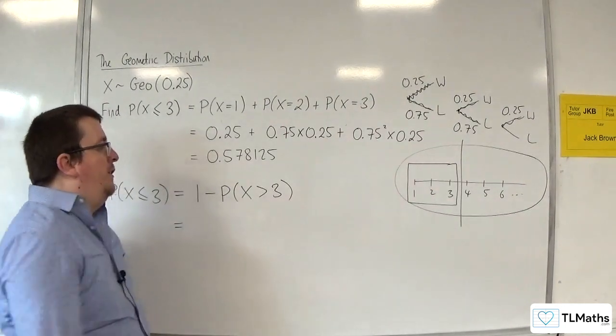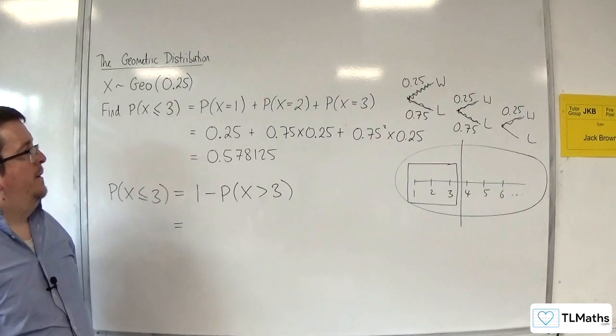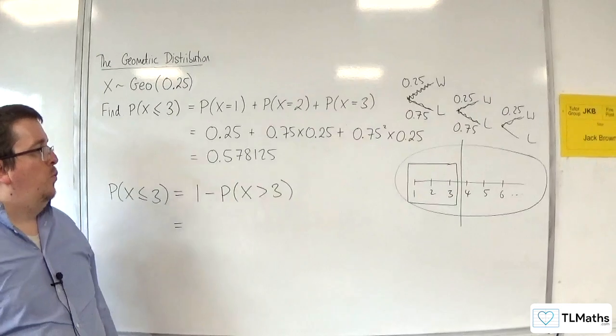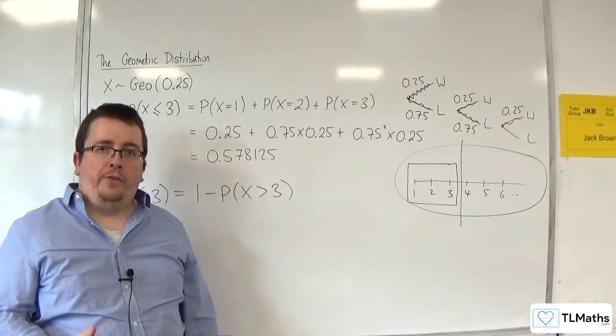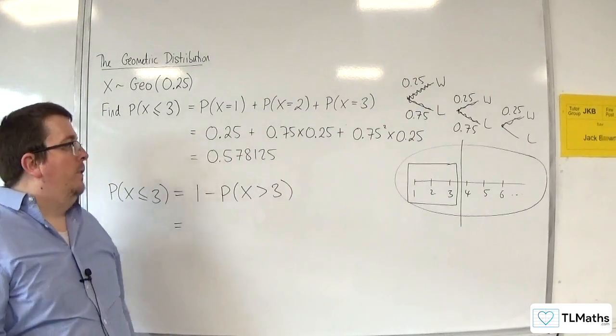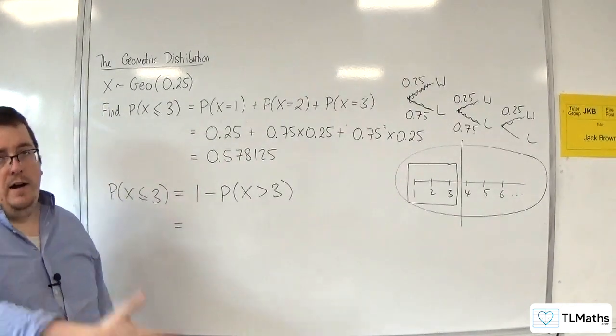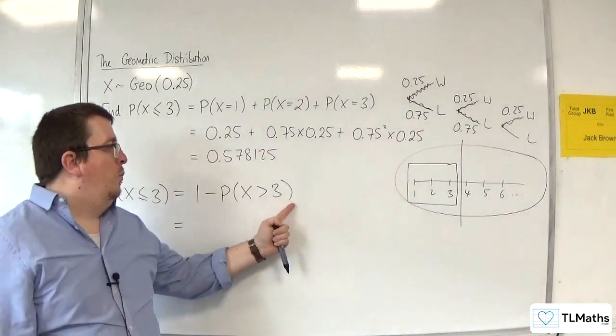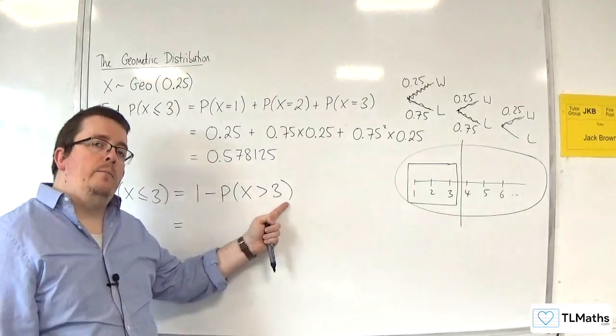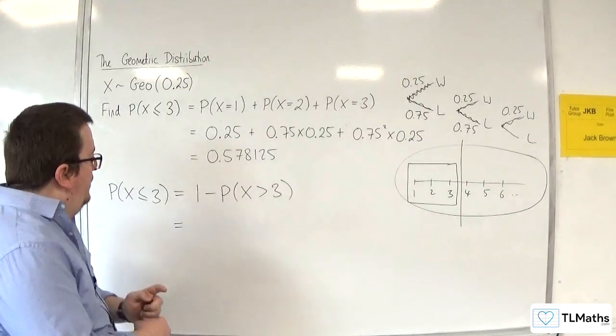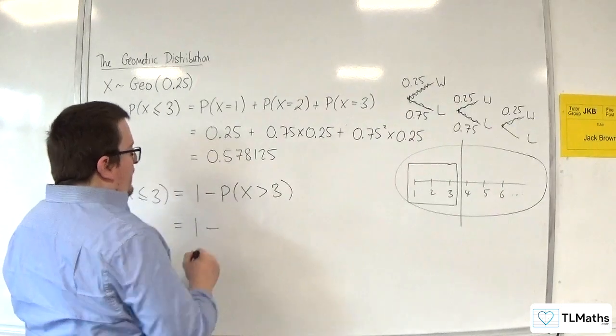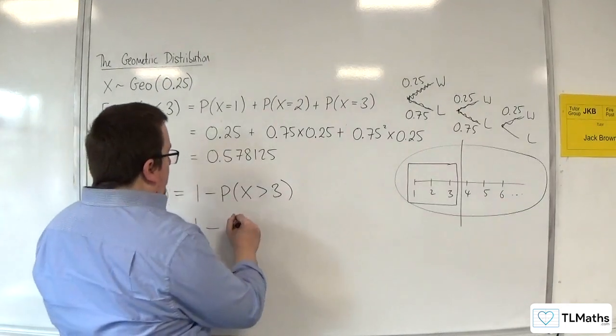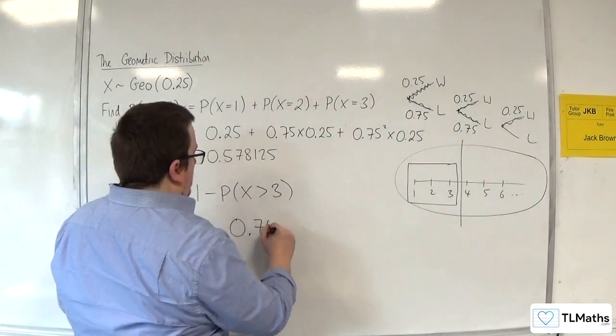What does the probability of X being greater than 3 actually mean? Well, that means that I don't win any of my first 3 games. The first win is going to come after 3 games. So, this is the same as me saying, well, I lose my first 3 games. So, the probability that I lose my first 3 games has got to be 0.75 cubed.